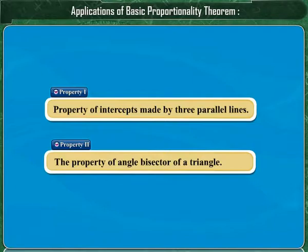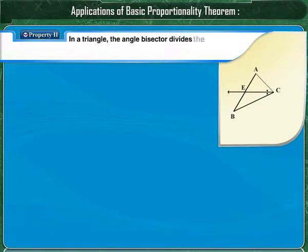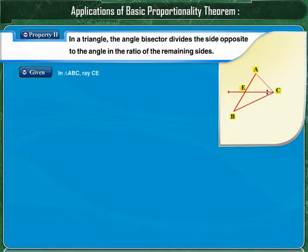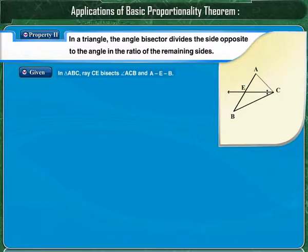The second property is the property of an angle bisector of a triangle: the angle bisector divides the side opposite to the angle in the ratio of the remaining sides. In triangle ABC, ray CE bisects angle ACB. Point E lies on side AB between points A and B, dividing AB into segments AE and EB. We have to prove that AE upon EB is equal to AC upon CB.